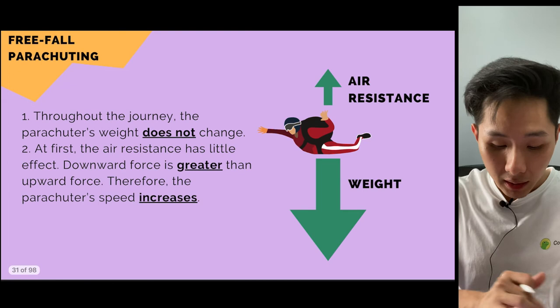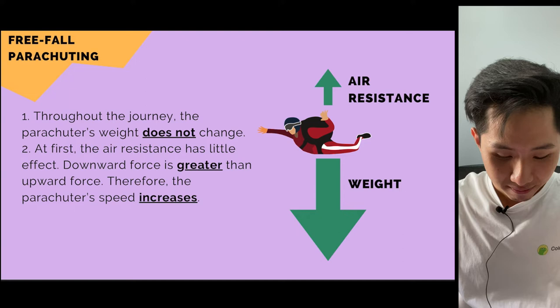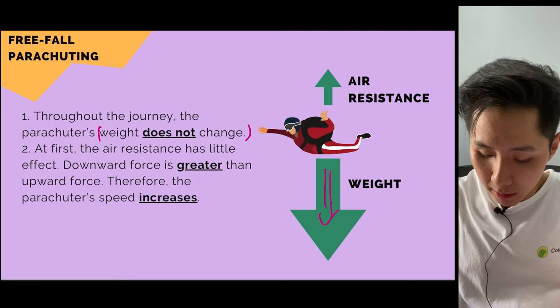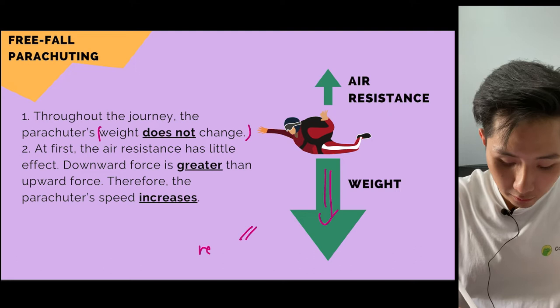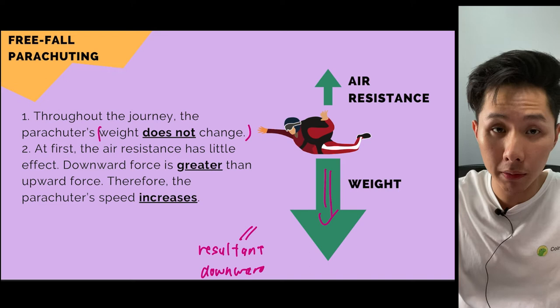Let's use the skydiving example to understand parachutes. As the skydiver falls, weight does not change. At first, the weight — the gravitational force on a person — is greater than air resistance, so there is a resultant downward force. According to Newton's first law, when there's a resultant force an object accelerates, which is why the speed of the parachute increases.